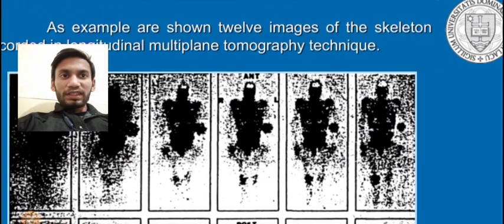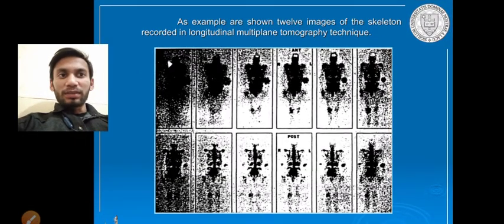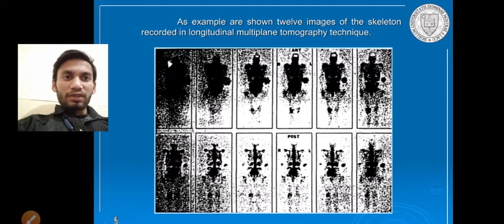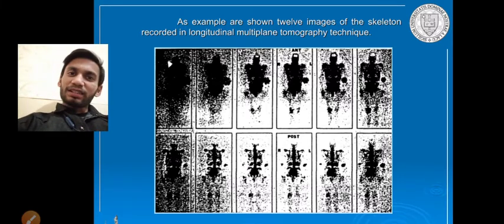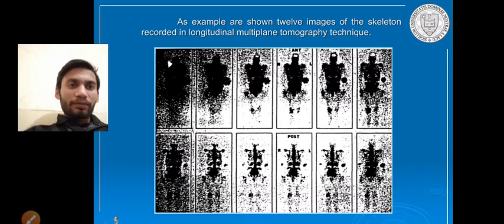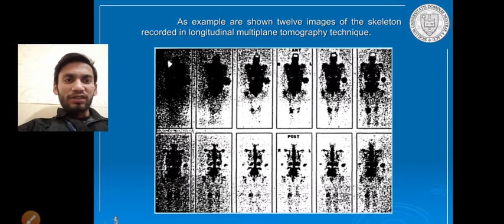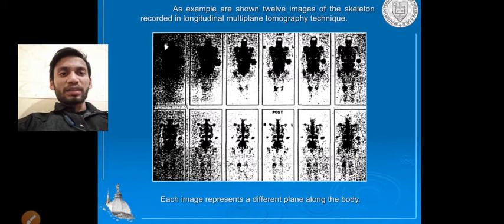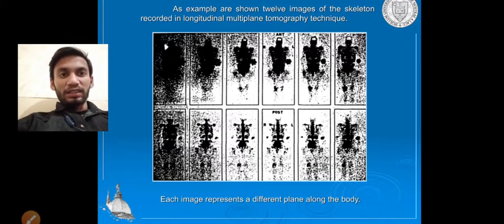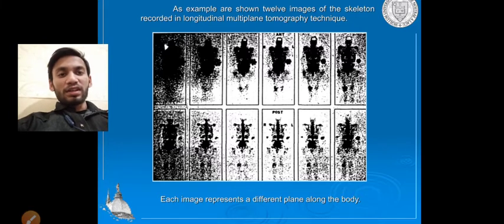You can see 12 images of the skeleton recorded using the longitudinal multiple tomography technique. Most images appear blurred with constant radiation, but the fourth or fifth image shows a completely clear, high-contrast image. All 12 images are taken from different angles: the upper six from the anterior side of the body, and the lower six from the posterior side.